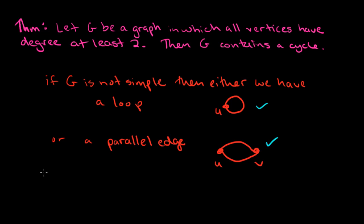So let's say now we assume that G is a simple graph. Assume G is a simple graph. And we need to prove this theorem for simple graphs. So we know that all the vertices in the graph have degree at least 2. And what we want to show is that there is a cycle in the graph.